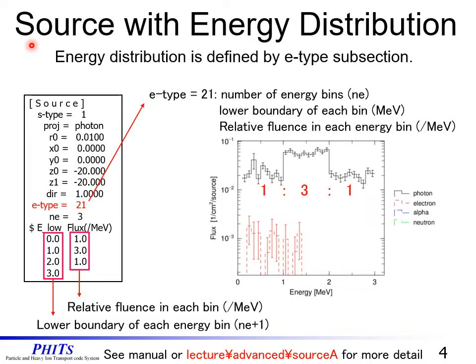Next, we demonstrate the setting of a source with an energy distribution. The energy distribution is defined by the E-type subsection. We should set E-type equal to 21. In this type, it is necessary to give the number of energy bins (NE), the lower boundary of each bin in MeV, and the relative fluences in each energy bin (per slash MeV) as parameters.